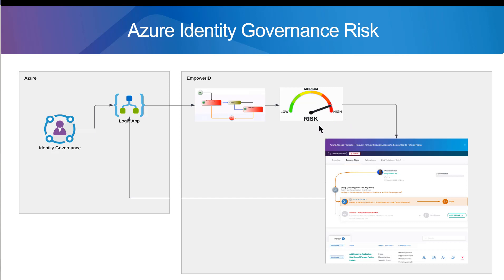It evaluates all of the access that this would grant them — directly and inherited access. If it triggers a risk policy as a violation, either a segregation of duties — like you can't be an external untrusted partner identity and have global admin rights — or just critical or sensitive access, meaning that it's a risk if you have this access no matter what, like being a global admin is a risk itself.